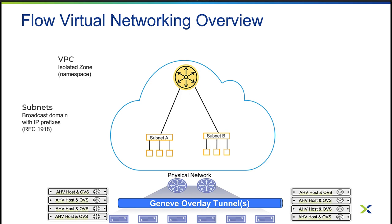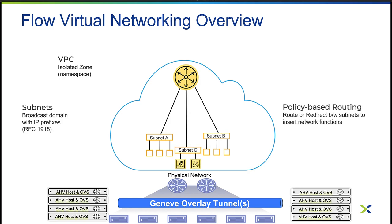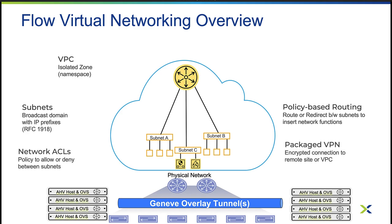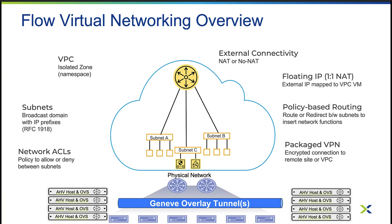That's where overlay technology comes into play. Flow Virtual Networking uses Geneve encapsulation to separate VPCs from each other and from the physical networks. In addition to subnets and routes, you can also define networking policies and even reroute traffic based on source and destination. You'll also need a way to get in and out of your VPC, and Flow Virtual Networking has you covered there — with the ability to do SNAT or source NAT, floating IPs, also known as one-to-one NAT, as well as routing these networks with a no-NAT capability.